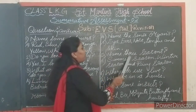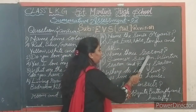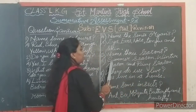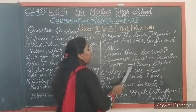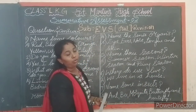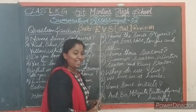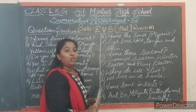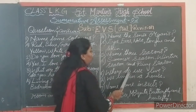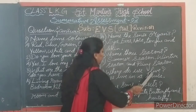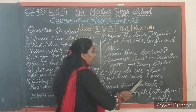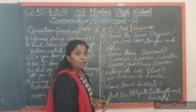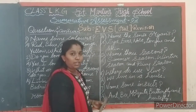Fifth question: name three seasons. Answer — summer season, winter season and rainy season. Now tell me children, name the three seasons. Yes — summer season, winter season and rainy season. The next question: where do we live? Answer — we live in a house. We live in a house. Where do we live? Yes, we live in a house.